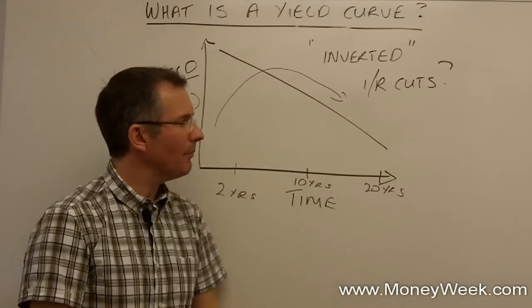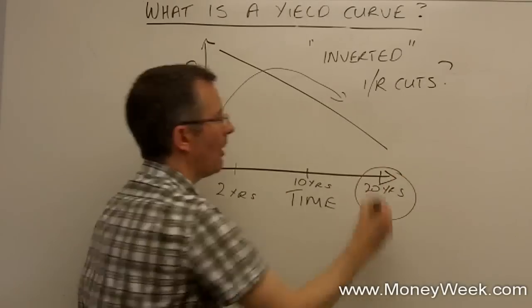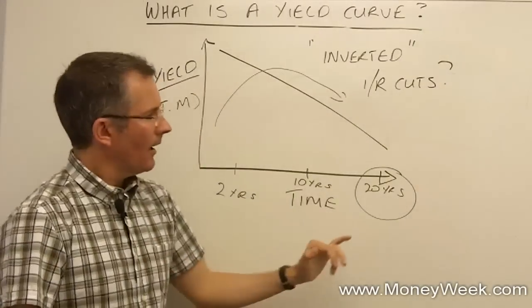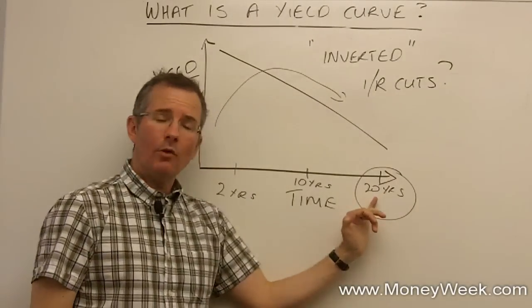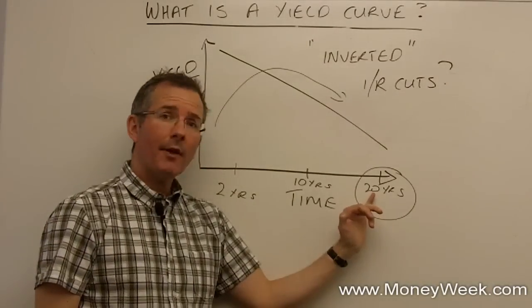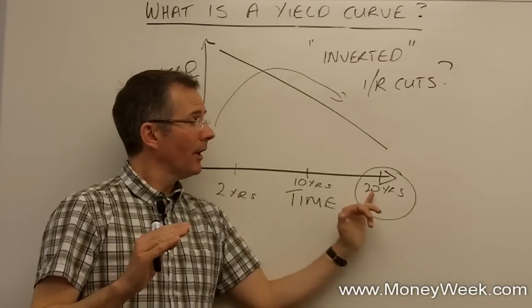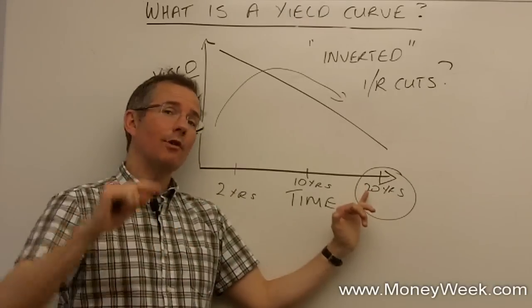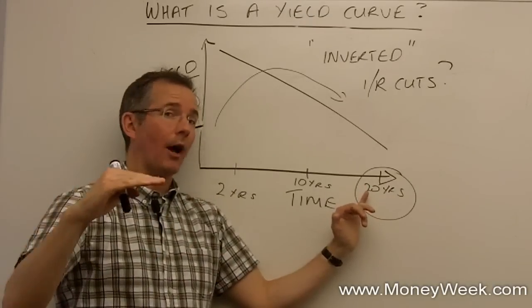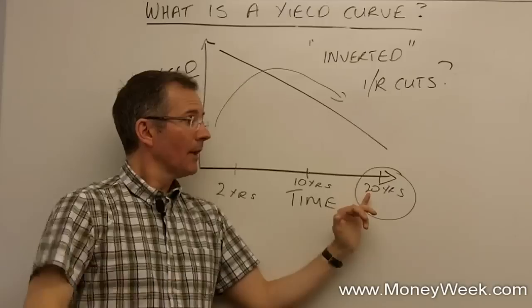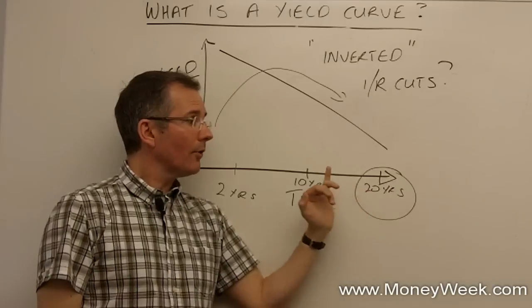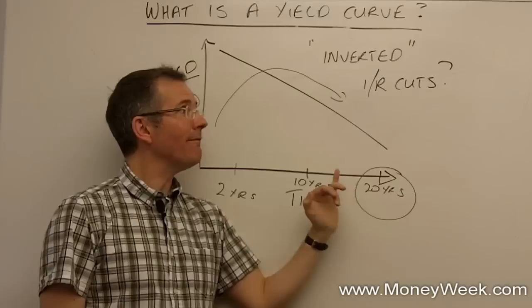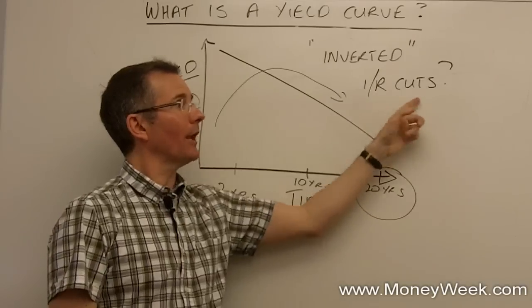I can lock in to a long-dated government bond with a decent fixed coupon. Don't forget the coupons are always fixed. The yield, remember, that we're looking at here, is a function of the coupon over the price, not just the coupon. So I can lock in to a long-term government bond with a decent coupon in an environment of falling interest rates.